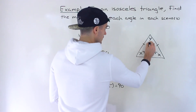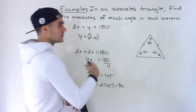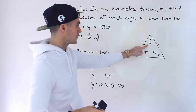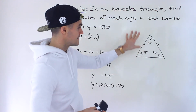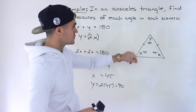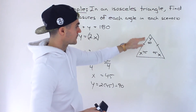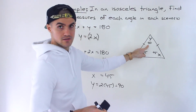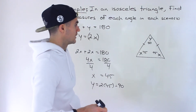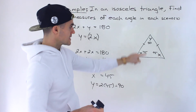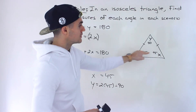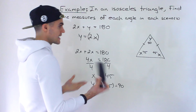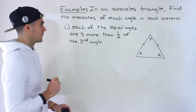Then y equals 2 times 45, which is 90. You can check they sum to 180. Notice this is actually an isosceles right-angled triangle because of that 90-degree angle, and the third angle is double each of the equal angles — which makes sense.